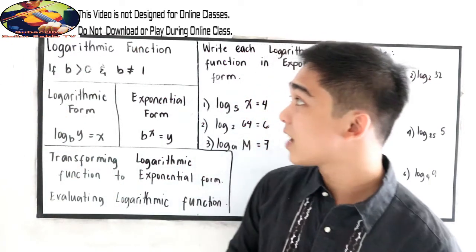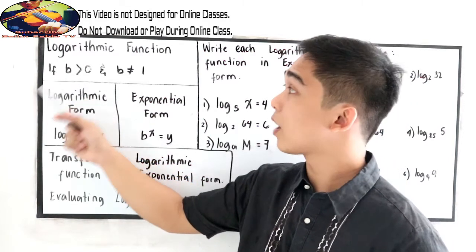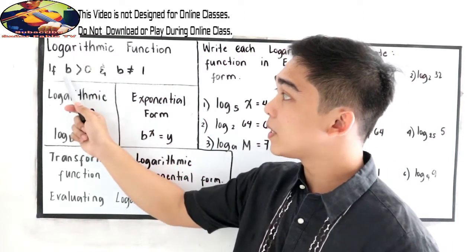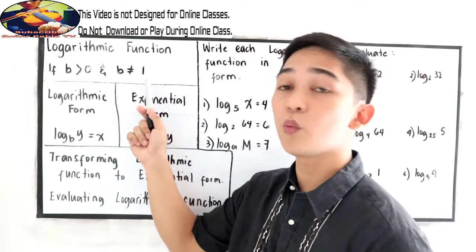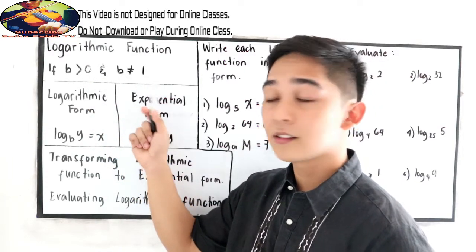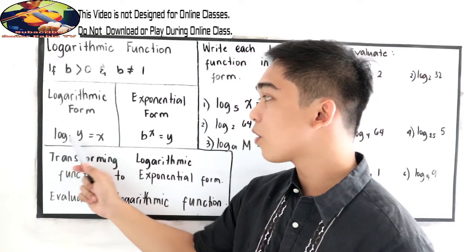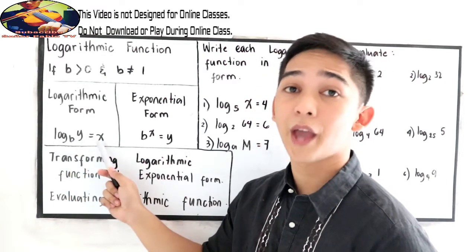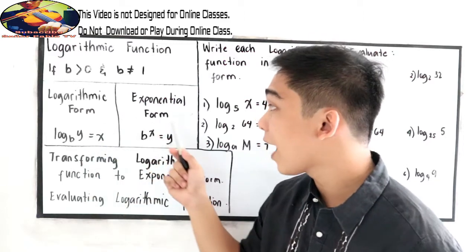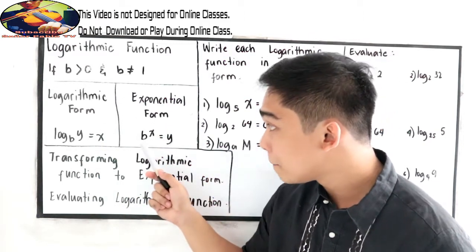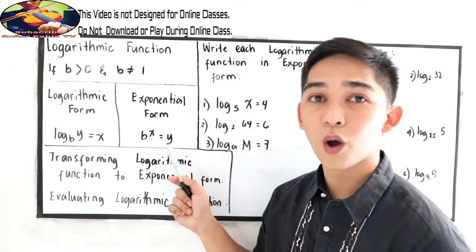We discussed that if we have our conditions for a logarithmic function — b is greater than 0 and b is not equal to 1 — then we have this form: log y base b is equal to x. And that can be written in exponential form as b raised to x is equal to y.